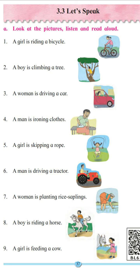Number 1. A girl is riding a bicycle. What is the girl riding? A bicycle. So what action is happening here? The action of riding. The girl is riding the bicycle, so the action word — the verb — is riding.